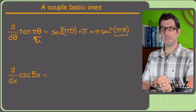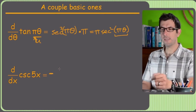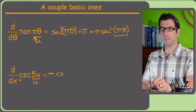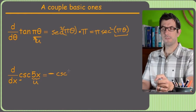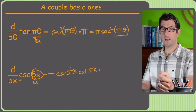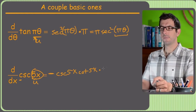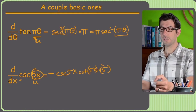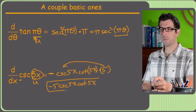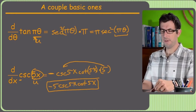Derivative of cosecant of 5x. Because it starts with 'c,' drop a negative sign immediately so you don't forget it. U is 5x. Derivative of cosecant is negative cosecant times cotangent: negative cosecant of 5x times cotangent of 5x, then multiply by u-prime, which is the derivative of 5x — just 5. Moving the 5 out front: negative 5 times cosecant of 5x times cotangent of 5x.